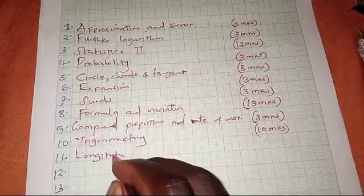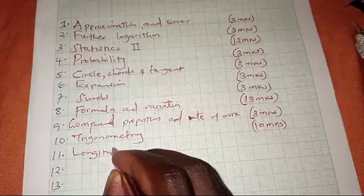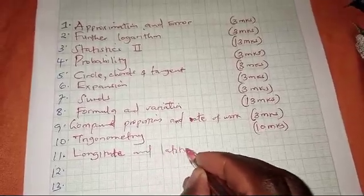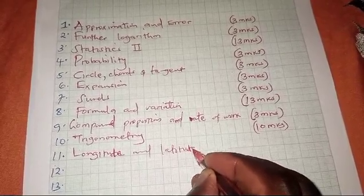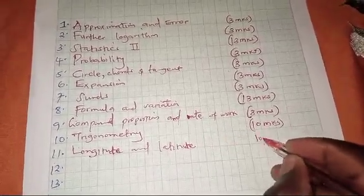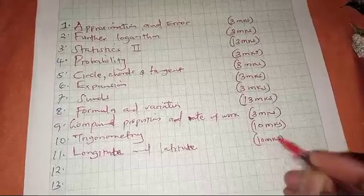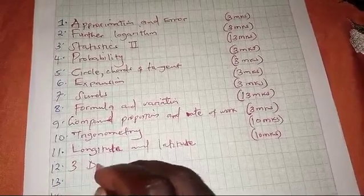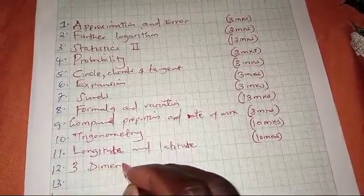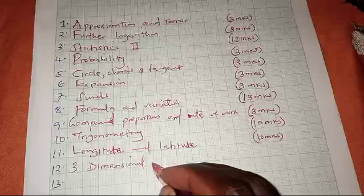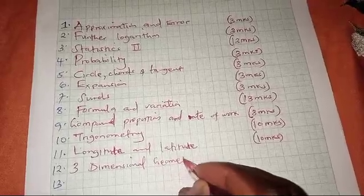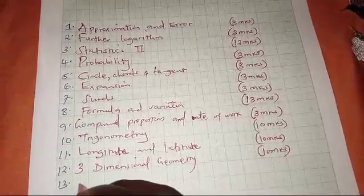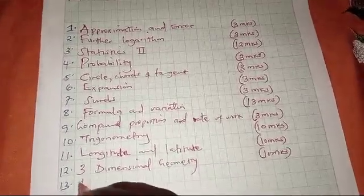The next topic is longitude and latitude. I feel we are going to have 10 marks from this part in section B. After that is three-dimensional geometry, also carrying a total of 10 marks.